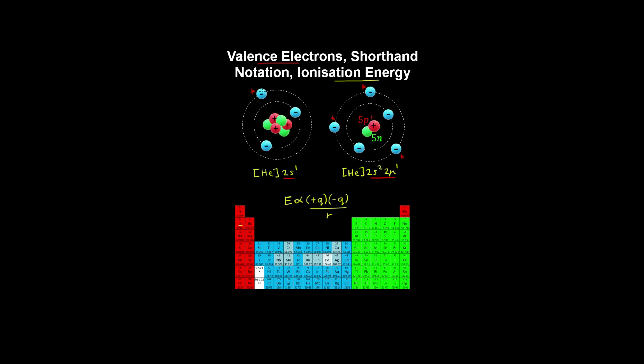So as you can imagine, it's going to be a lot easier to ionize a valence electron, which is farthest from the nucleus.